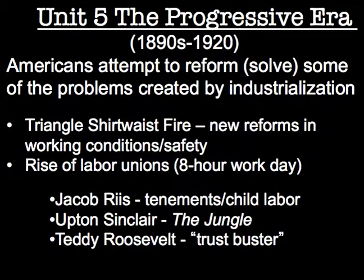We've just concluded Unit 5 on the Progressive Era. In this unit we looked at all of the reforms designed to fix problems created by industrialization and immigration. We began by studying the Triangle Shirtwaist fire, which led to new reforms in working conditions and worker safety. Workers organized and demanded better working conditions and a more reasonable eight-hour workday. We learned about muckraking journalists like Jacob Riis and Upton Sinclair, and reforming politicians like Robert La Follette and Teddy Roosevelt.